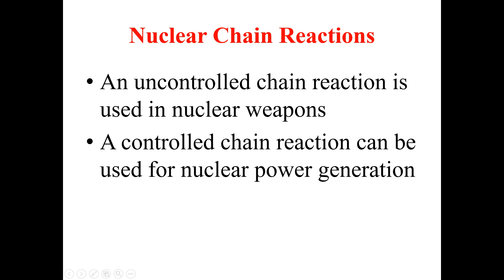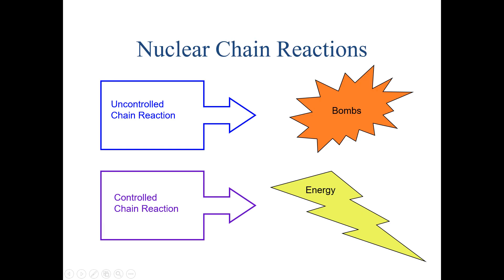Controlled chain reactions are used in nuclear reactors where we want to generate power for electricity. To summarize: uncontrolled chain reactions are utilized for producing fission bombs, while controlled chain reactions are used in nuclear reactors for energy and electricity production. That's all for nuclear chain reactions — see you in the next lecture. Bye bye.